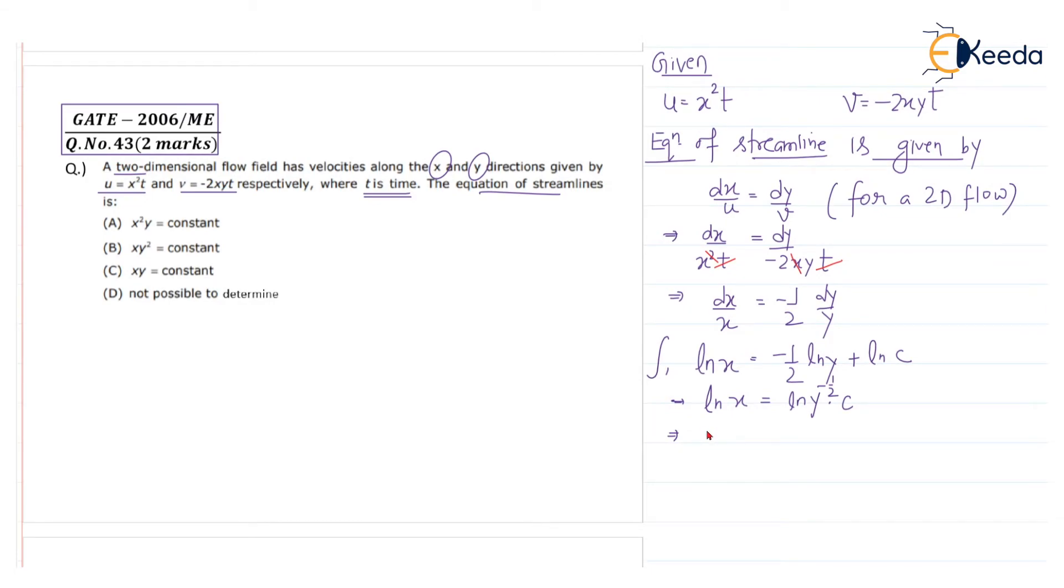Now we can write x equals c by... one by y to the power one by two is root y, and that will come into the denominator: c by root y. So we can write x root y equals constant. Squaring both sides, you will get x squared y equals constant.